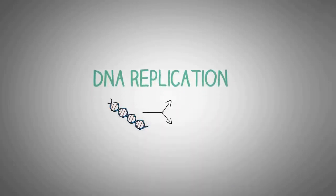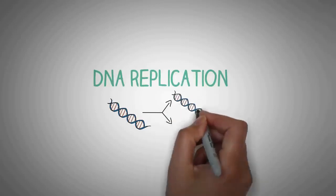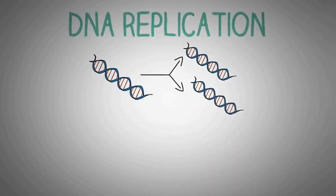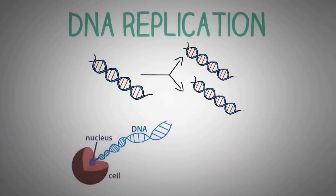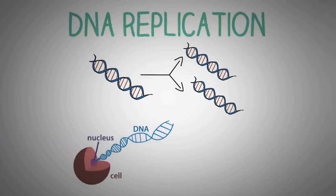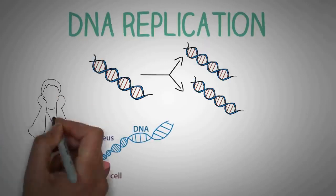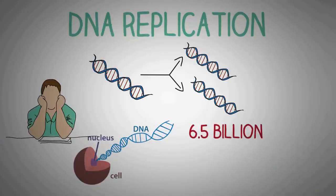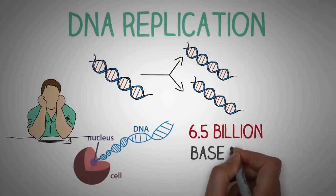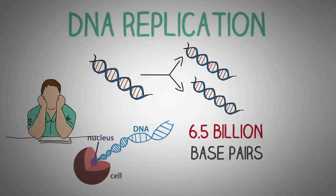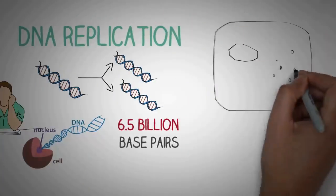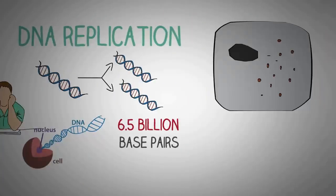DNA replication is the biological process of producing two identical replicas of DNA from one original DNA molecule. As simple as it may seem, it is one of the most complicated biological processes and involves the accurate copying of almost 6.5 billion base pairs in a complete set of DNA during each cell division.